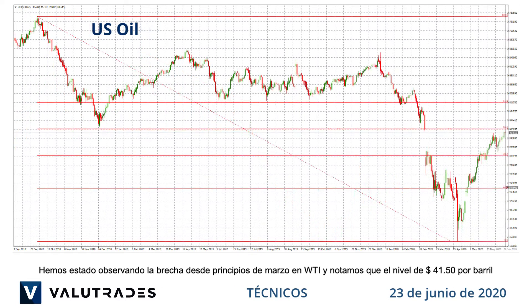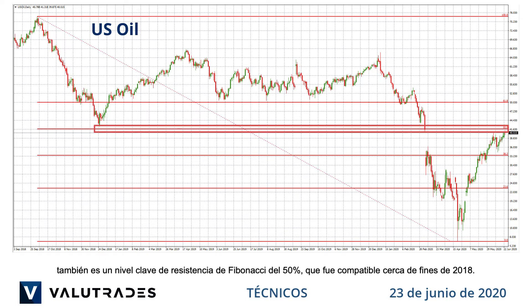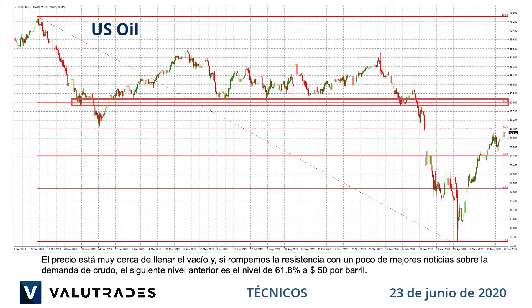We have been watching the gap from early March on WTI, and we note that the level of $41.50 per barrel is also a key 50% Fibonacci resistance level, which was support near the end of 2018. Price is very close to filling the gap, and if we break resistance with a bit of better news on crude demand, the next level above is the 61.8% level at $50 per barrel.